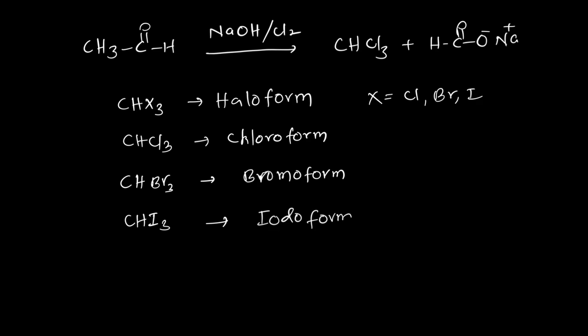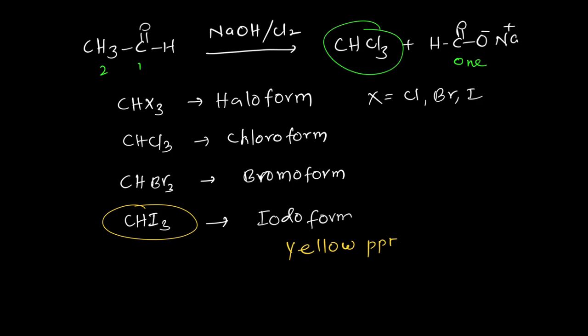In that, iodoform is a yellow color precipitate. Now keep in mind: here there are two carbons, but the formic acid formed has only one carbon. Because as a haloform, one carbon leaves from the reactant. Therefore, one carbon less than the reactant is in the carboxylic acid product. Whether it is an aldehyde or ketone, this carboxylic acid forms — keep that in mind.